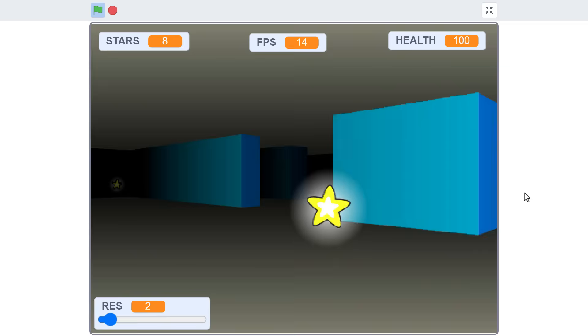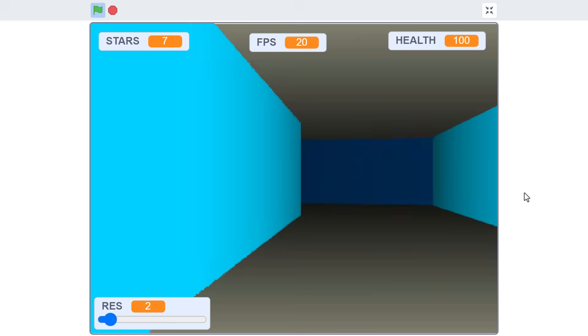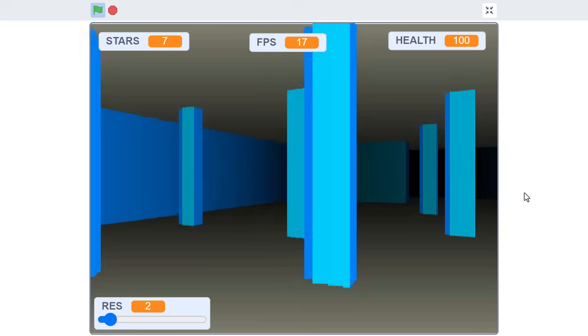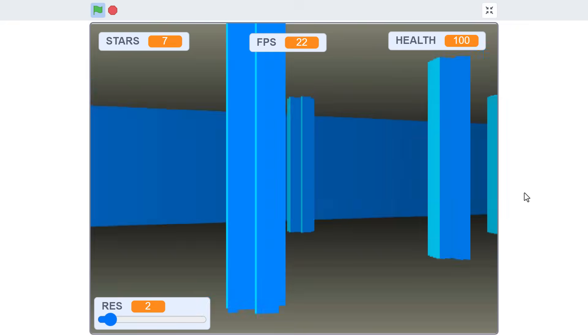And a res of 2 is incredibly playable for me, but I want it faster. Is that even possible? Hey look, my famous pillar room is looking different. The pillars are so much thinner than they used to be. Do you know why?